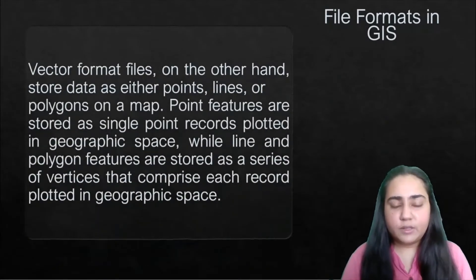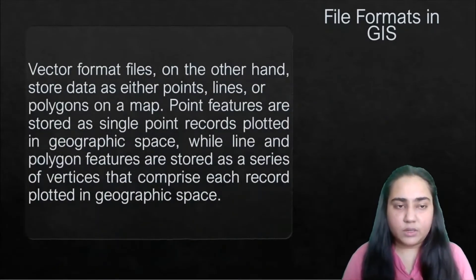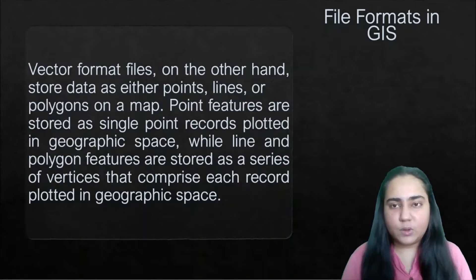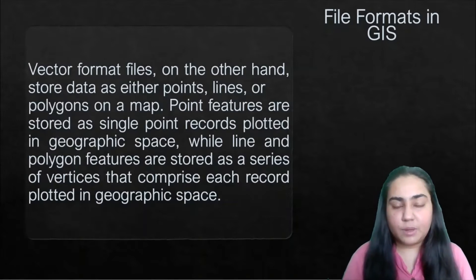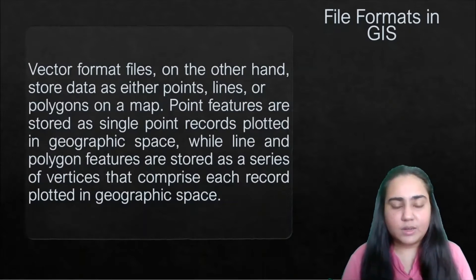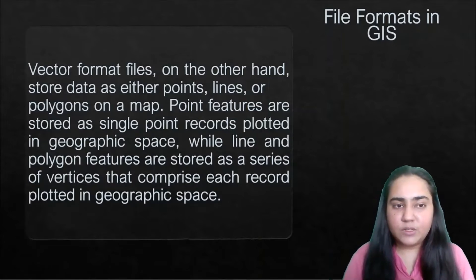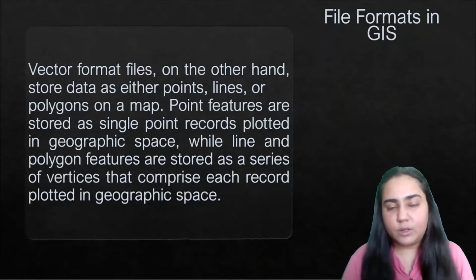Vector format files, on the other hand, store data as either points, lines, or polygons on a map. This is different from raster format, which uses grids and axes to store data. Vector format stores data as points, lines, or polygons, as we saw in the previous video.